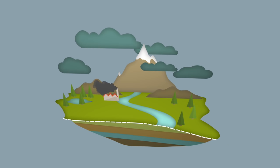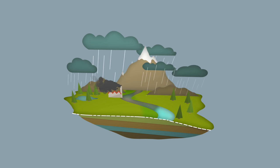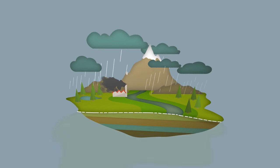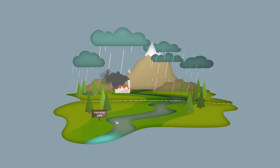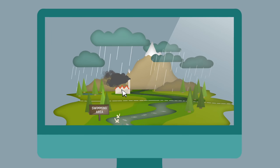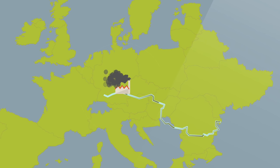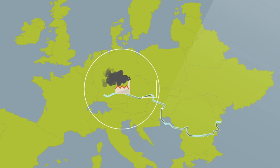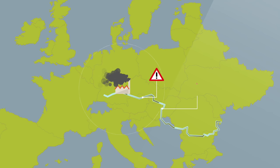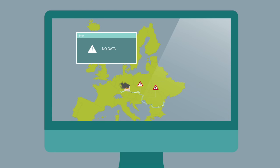Or look at this region. Extreme weather flooded an industrial chemical plant, contaminating the river. Downstream in the neighbouring country, people use the water for recreation and agriculture. Governments and local authorities need to have data and timely information to help predict the impact on their community.